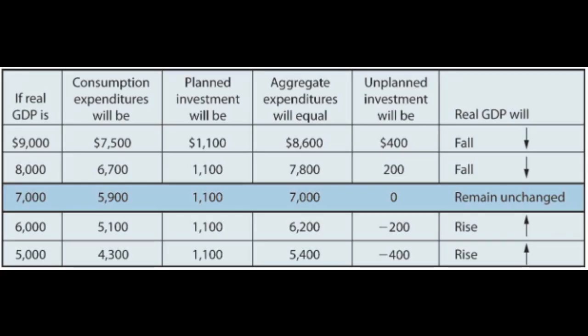All points off equilibrium are unsustainable in this model. If real GDP is higher than aggregate expenditures, then firms invested in building too much inventory, and we'd expect real GDP to fall. The opposite is true if real GDP is lower than aggregate expenditures — firms didn't invest in building enough inventory, and we'd expect real GDP to rise.